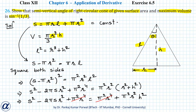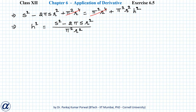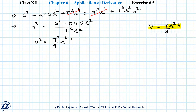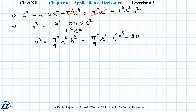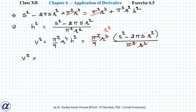Substituting this h² into V² (after squaring the volume expression): V² = (π²/9) · r⁴ · h² = (π²/9) · r⁴ · (S² − 2πSr²)/(π²r²). The π² cancels and r⁴/r² = r², simplifying to V² = (S²r²/9) − (2πS/9)r⁴.